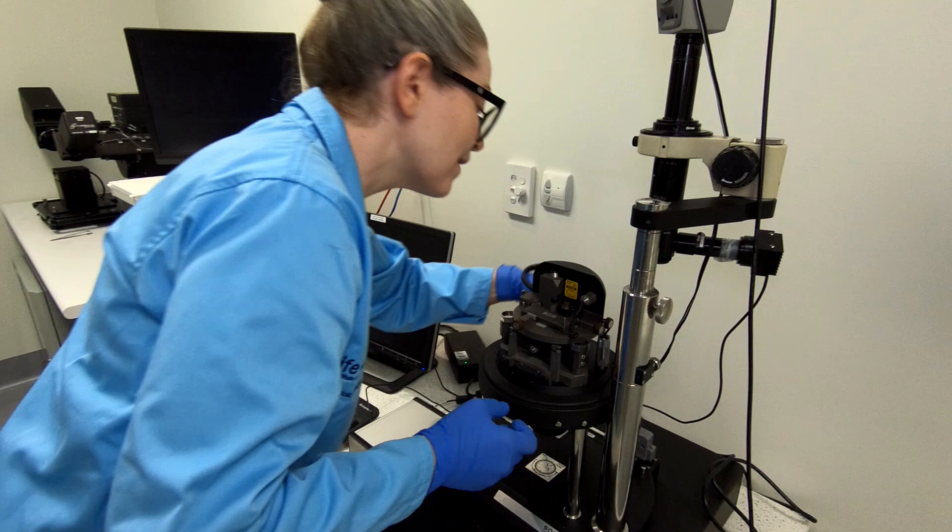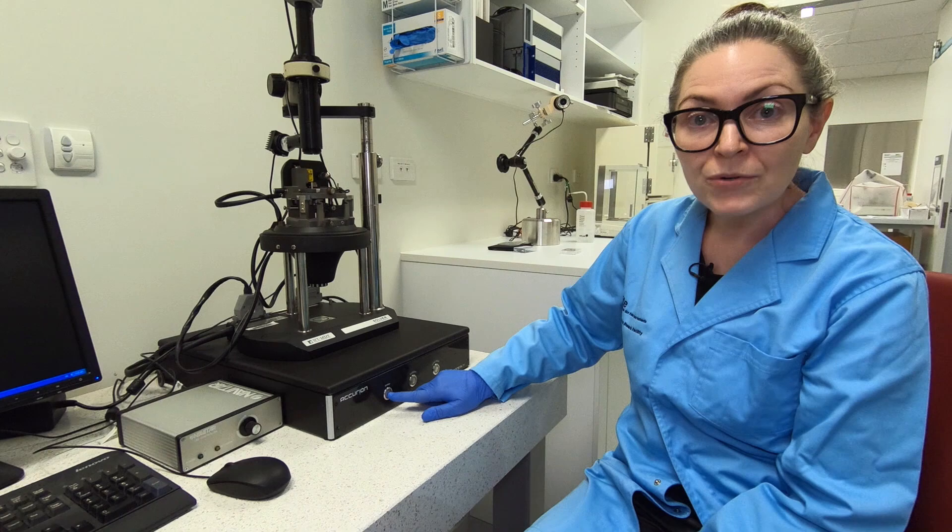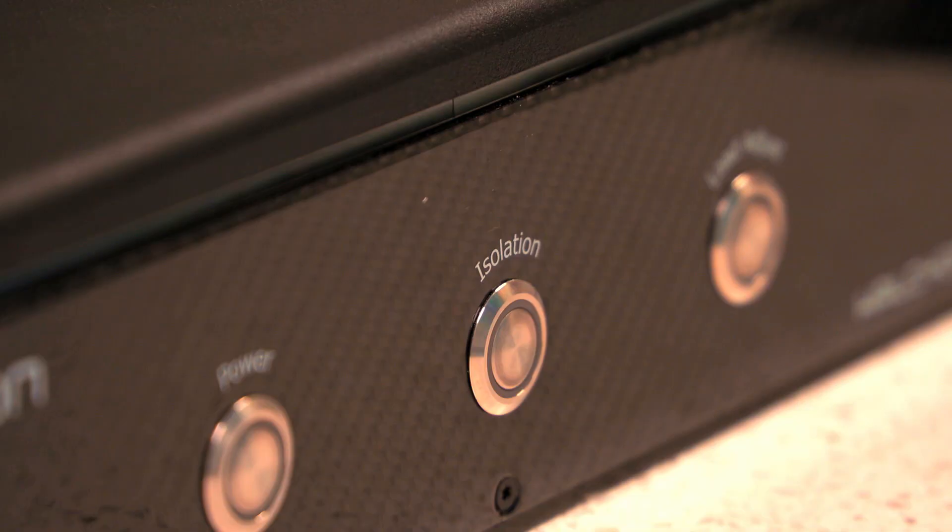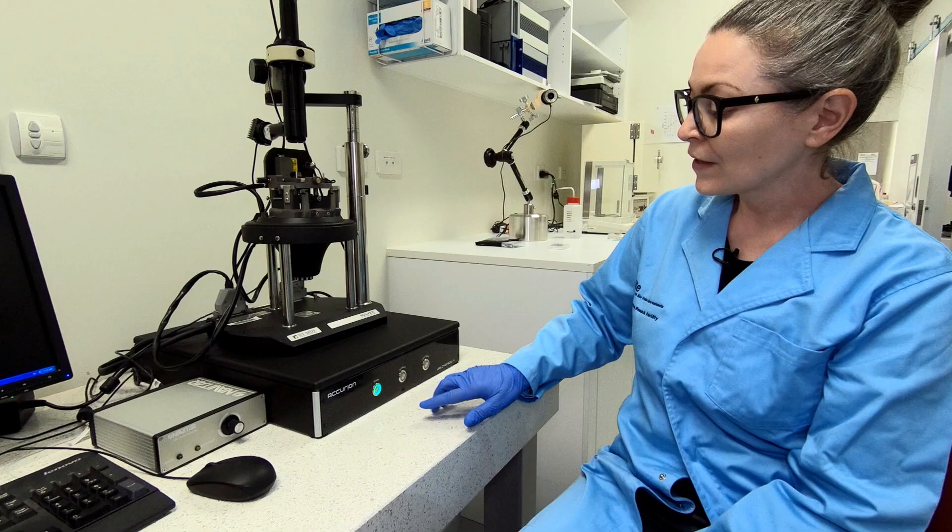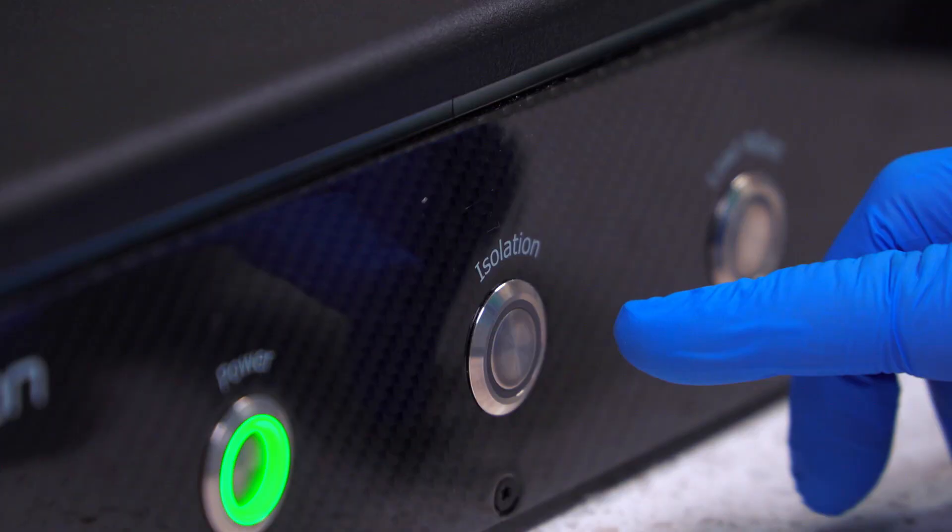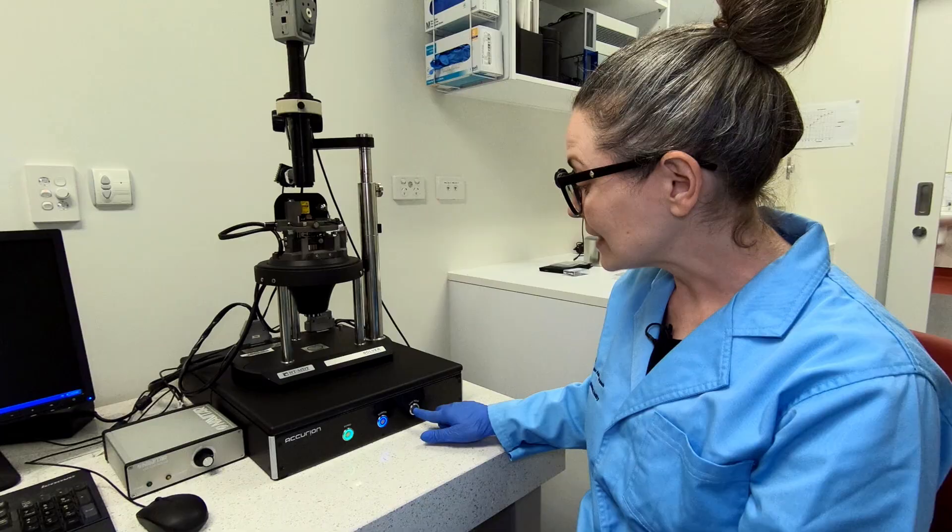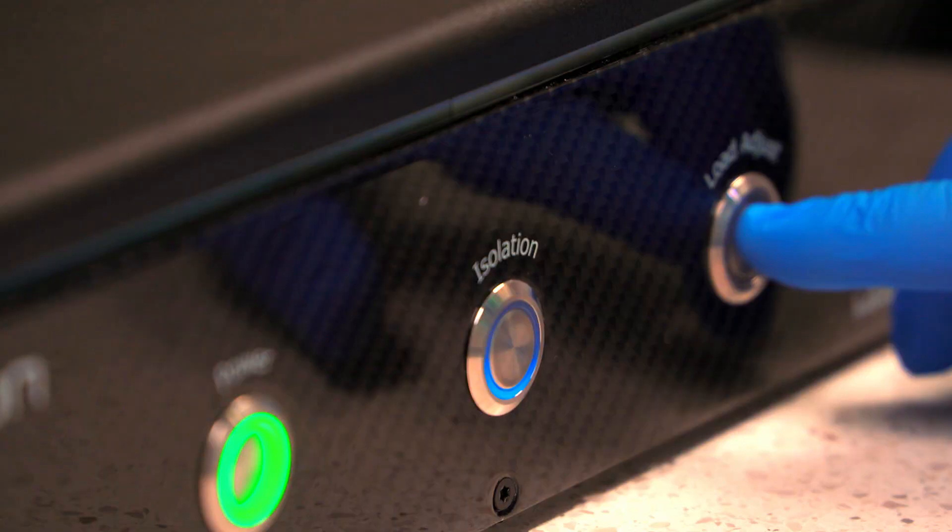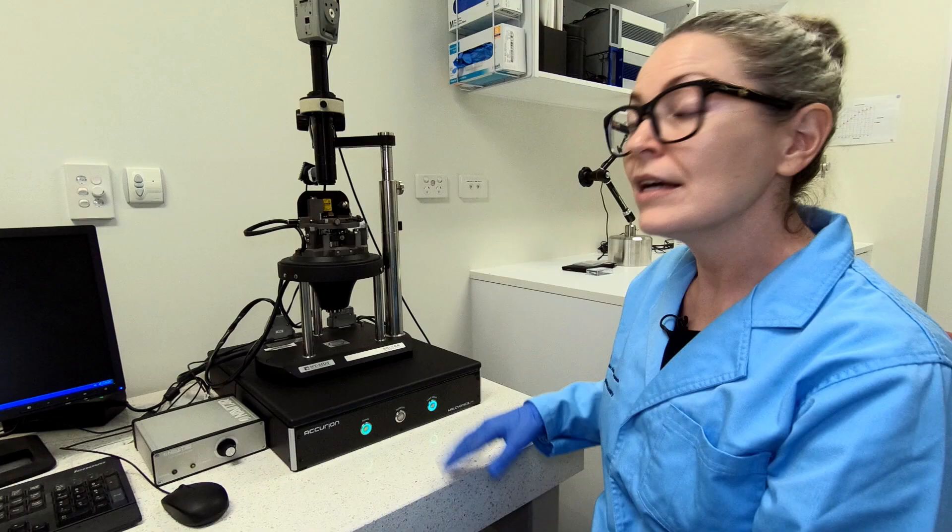The next thing we're going to need to do is turn on all the bits of equipment that are necessary. Our first step is to vibrationally isolate the microscope. Atomic force microscopy is really sensitive to vibrations, so we use this active damping stage to make sure that any vibrations are damped out.